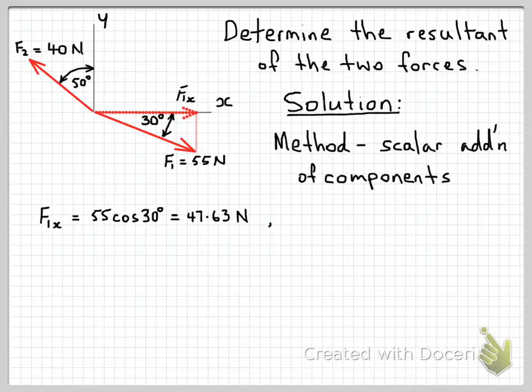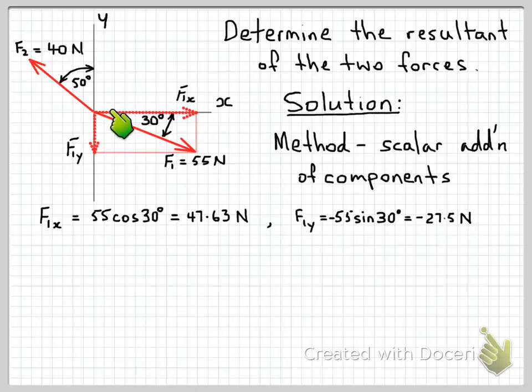And then next we'll find the y component. So the y component is directed along here in the y direction. And we know the magnitude of that component, because again we have a right angle triangle here. So the magnitude of that scalar component in the y direction will be F1 times sin 30 degrees. We also note that this is in the negative direction. So we have minus 27.5 Newtons for the y component of the force F1.